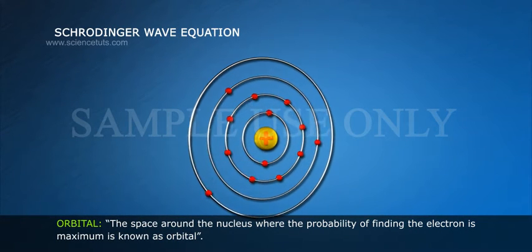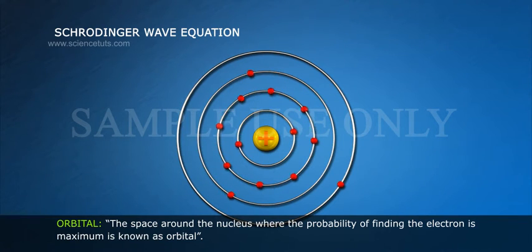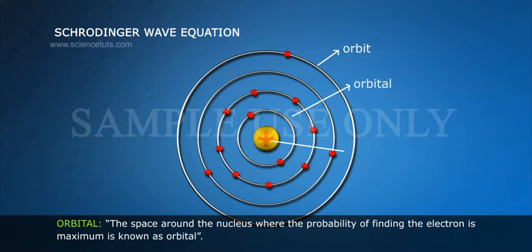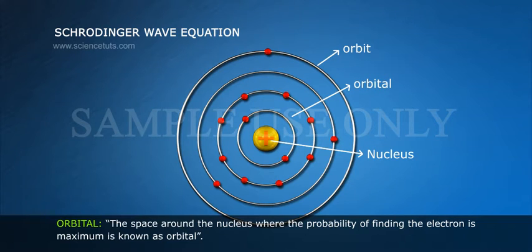Orbital. The space around the nucleus where the probability of finding the electron is maximum is known as orbital.